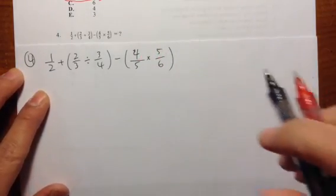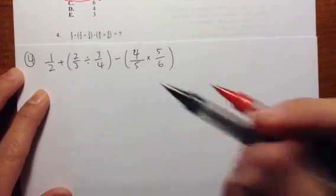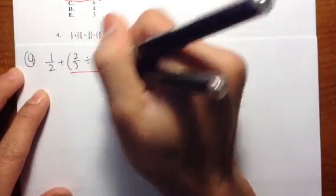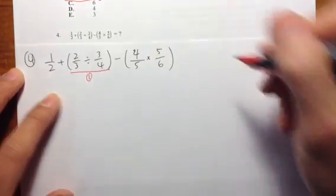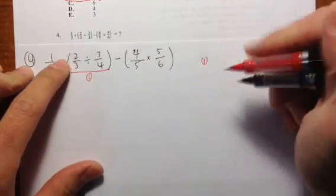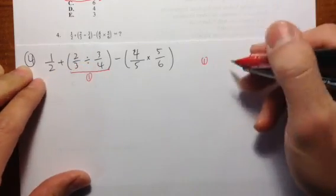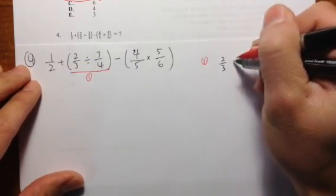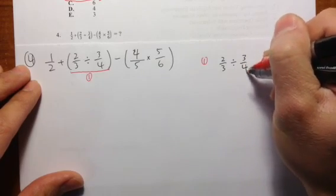The key here is make sure that you do the parentheses first. So, inside the first parentheses, let me write this on the side — I need to work on 2 over 3 divided by 3 over 4. So let me do that right here: 2 over 3 divided by 3 over 4.